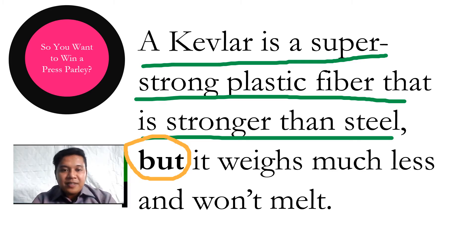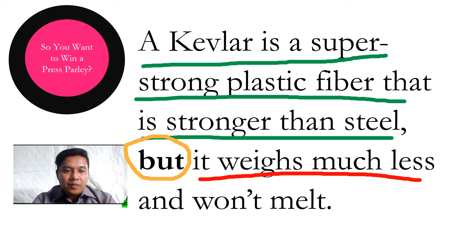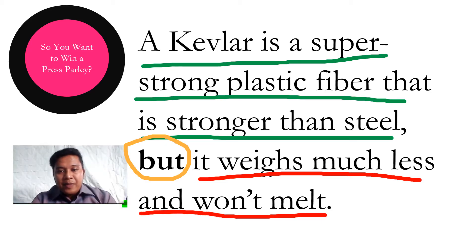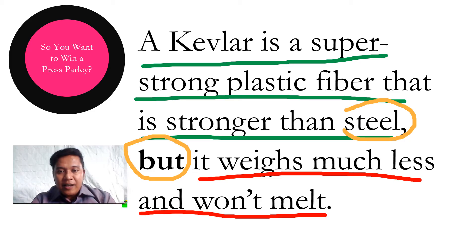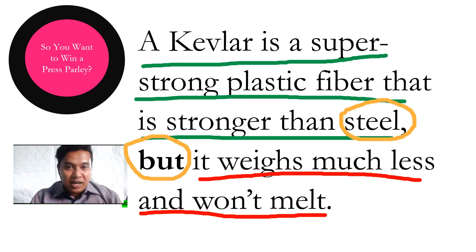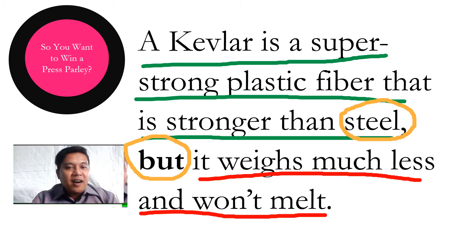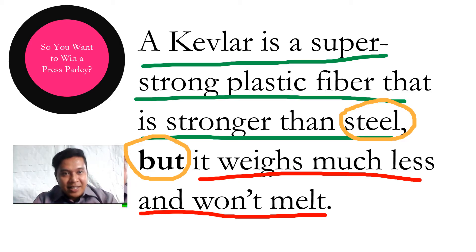The second part of the definition follows. Based on this, the meaning of Kevlar becomes clearer, because we know that steel is strong, but a Kevlar is stronger. A steel may be heavy, but a Kevlar weighs much less. A steel may be melted, but a Kevlar cannot melt. So that's one way on how to make an informal definition.